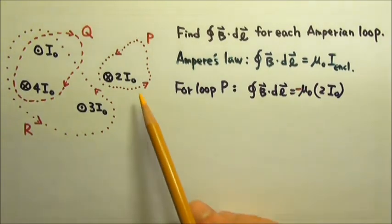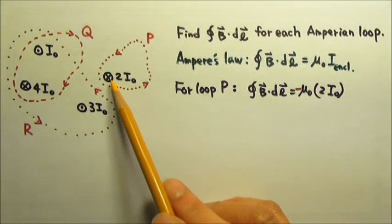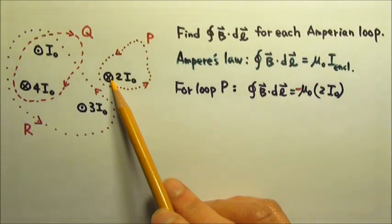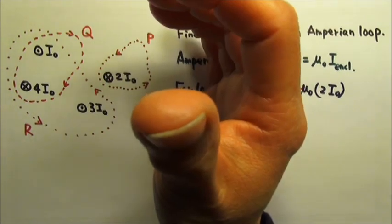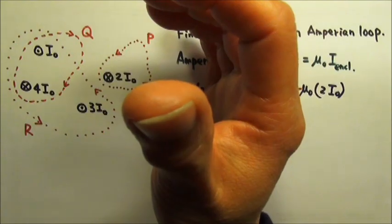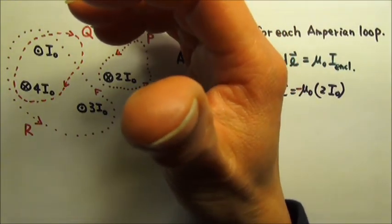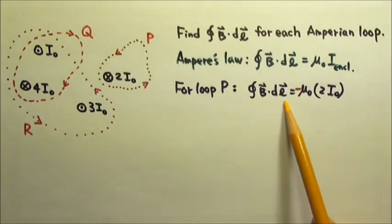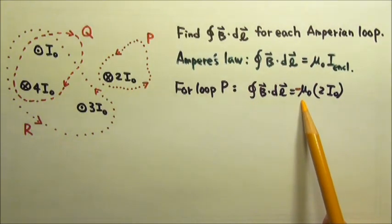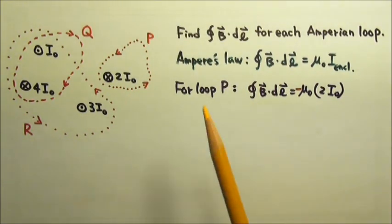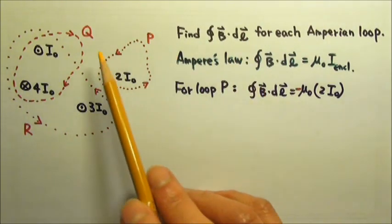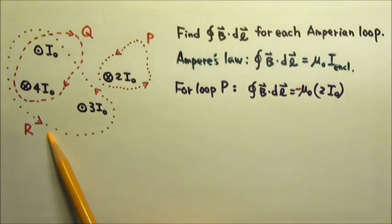For example, for loop P, if the enclosed current goes out of the paper, then both the Amperian loop and the enclosed current's magnetic field lines are counterclockwise. The circulation, this closed integral, would be positive. Now please find this integral for loop Q and R if you haven't already.